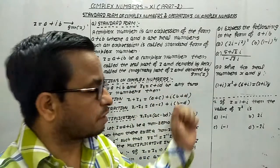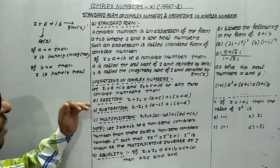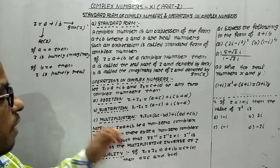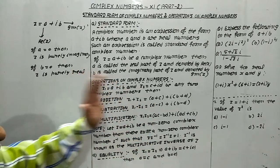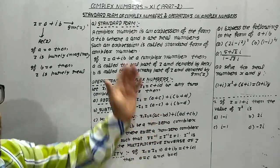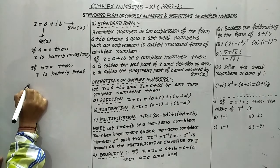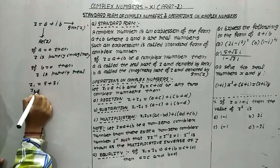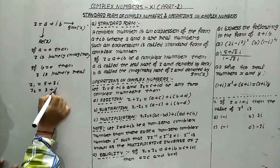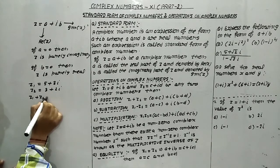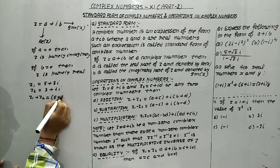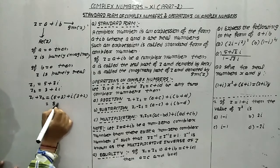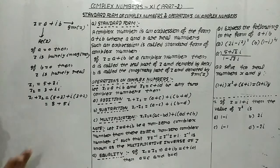Now, operations on complex numbers. If we have two complex numbers z1 equals a plus ib and z2 equals c plus id, then addition means: add the real parts, plus i times the addition of imaginary parts. For example, let z1 equal 5 plus 3i and z2 equal 3 plus 2i. Then z1 plus z2 equals (5+3) plus i(3+2), which gives 8 plus 5i.